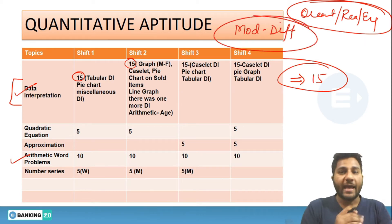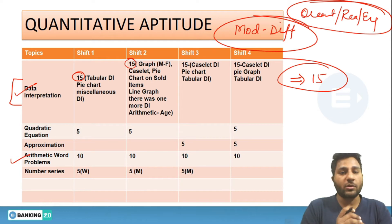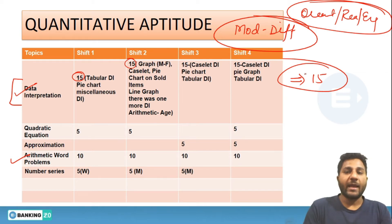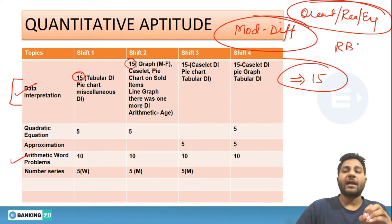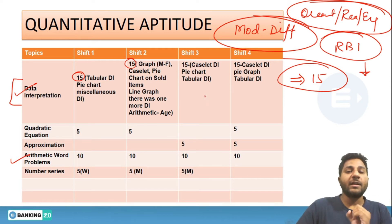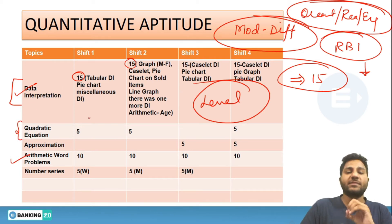As we have predicted in the analysis done a couple of days back, the 10th October examination would be a bit different from 3rd October. They wanted to reduce the cutoff — similar to how RBI uses monetary policy to balance cash flow in the market, IBPS is using the level of examination to maintain the cutoff. In the quadratic equation section, they asked questions in every shift except the third shift.